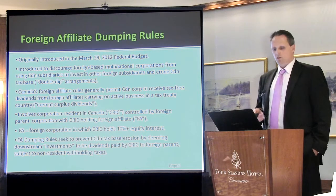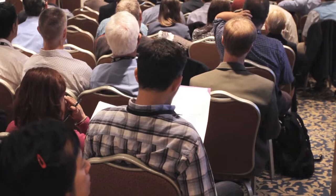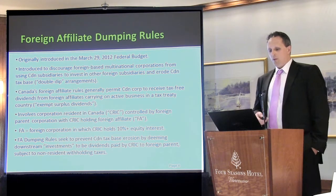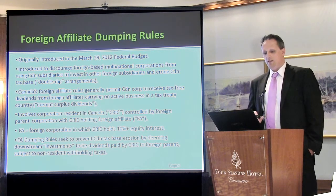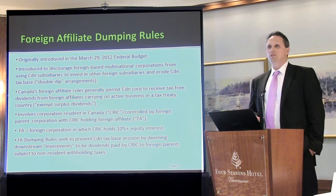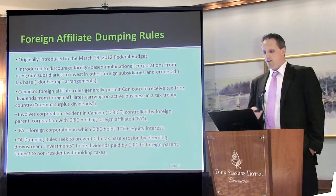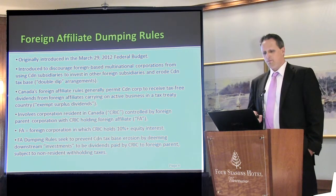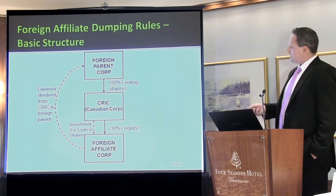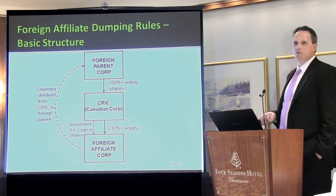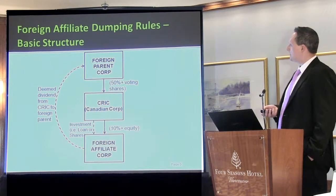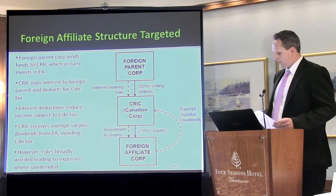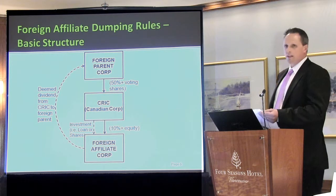The structure involves a foreign parent controlling a Canadian corporation, which in turn has a foreign affiliate below it. In general terms, a foreign affiliate for tax purposes is one where the Canadian company holds at least ten percent of the equity of that foreign company. So the rules apply when a Canadian corporation owns at least ten percent of a foreign corporation and has a foreign parent above it.